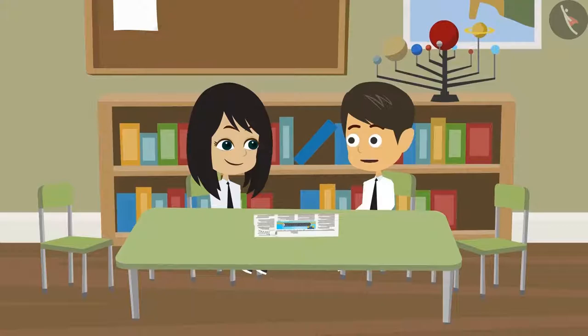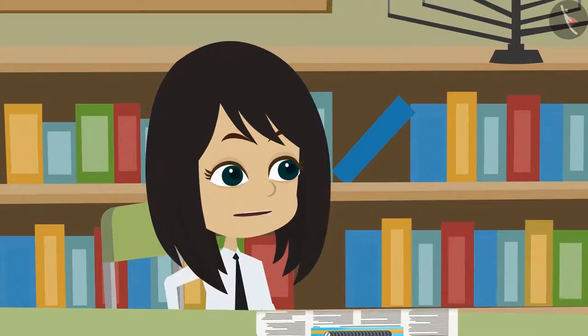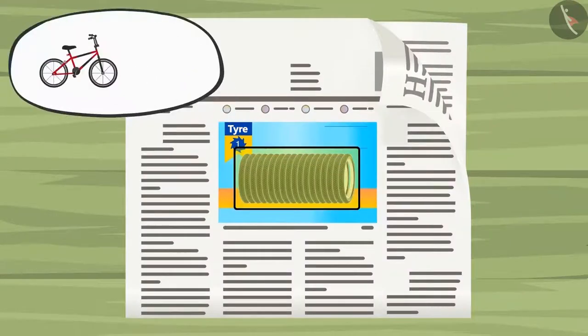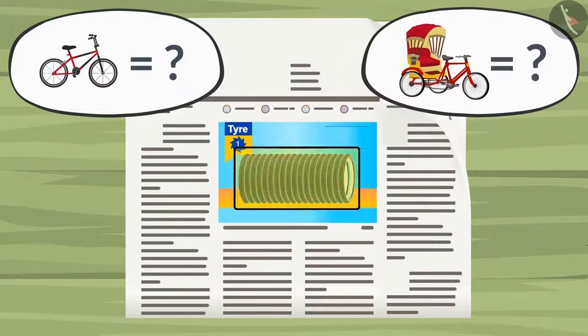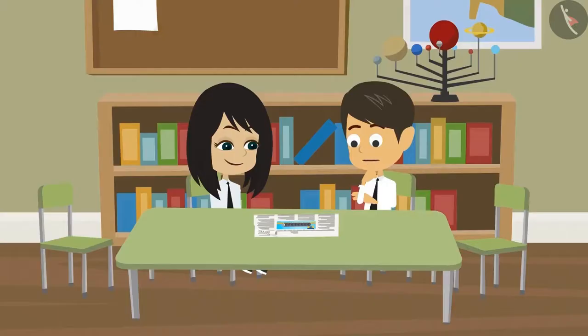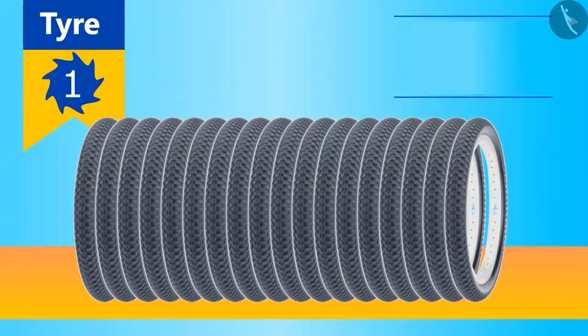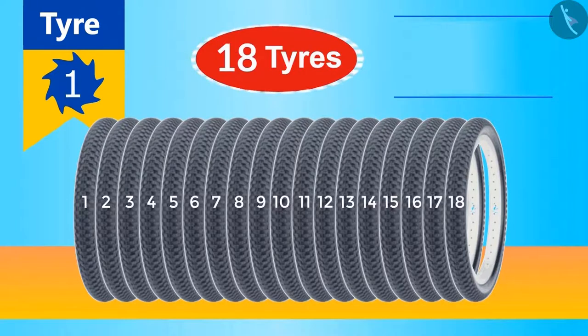Yes, it can also be a tire of a rickshaw. If these are bicycle tires, can you tell me how many bicycles do they belong to? And if these are rickshaw tires, how many rickshaws do they belong to? Let me try. First, let's count these tires. There are 18 tires.